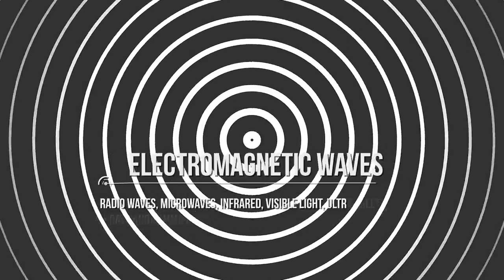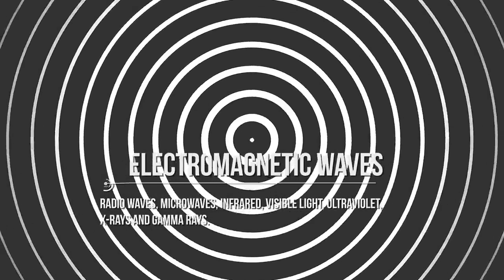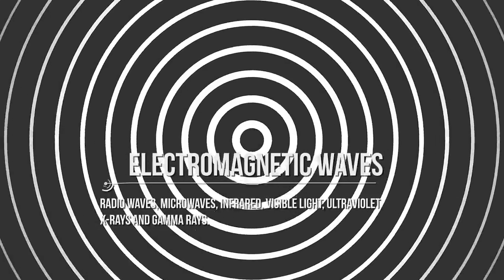There are different types of electromagnetic waves. In fact, they are classified into seven categories depending on their frequency: radio waves, microwaves, infrared, visible light, ultraviolet, X-rays, and gamma rays.